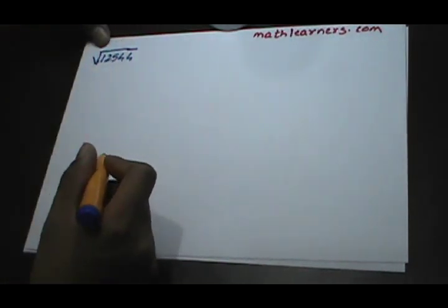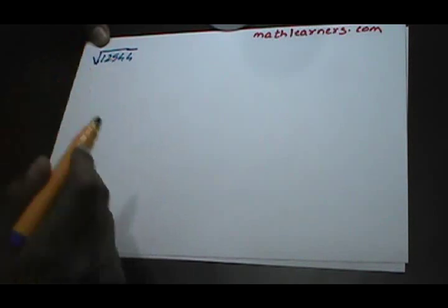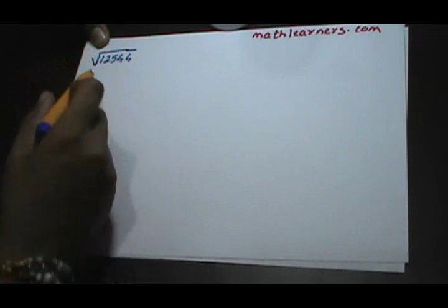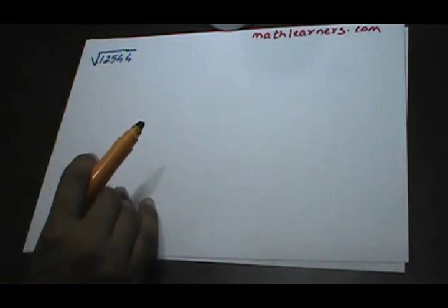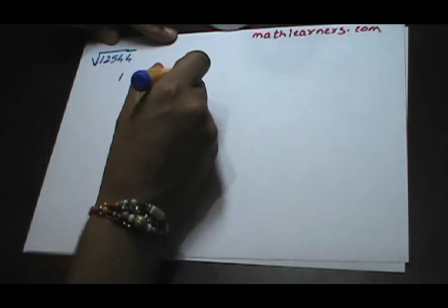Let's say we want to find the square root of 12544. From the right hand side we make pairs of 2 digits: 44 will form one pair, 25 will form one pair, and 1 will be left alone. So we can write this as 1, 25, 44.